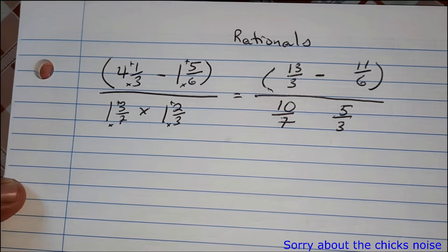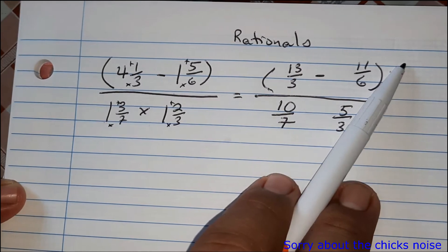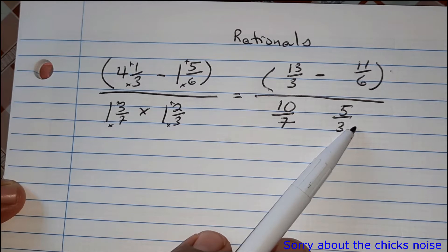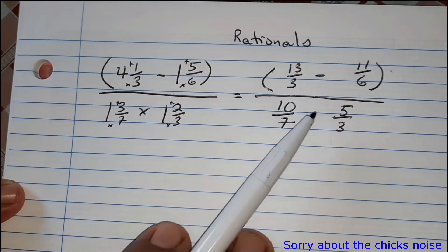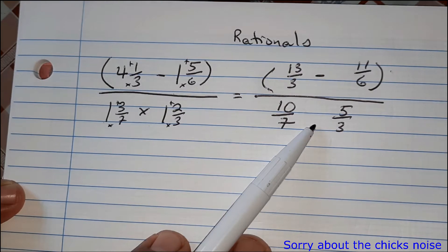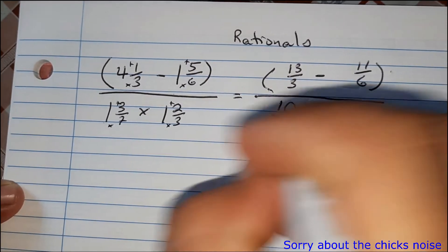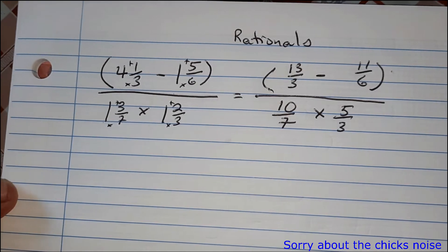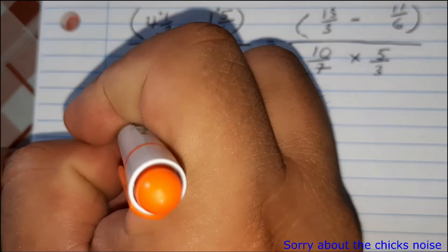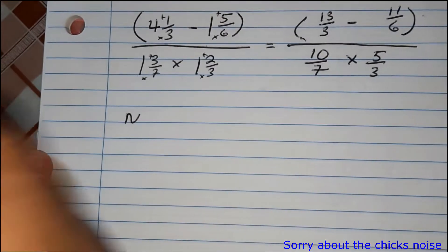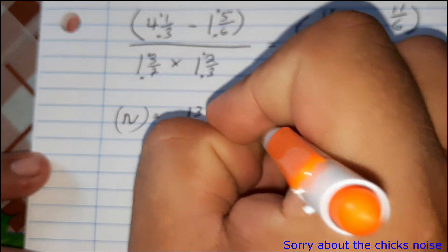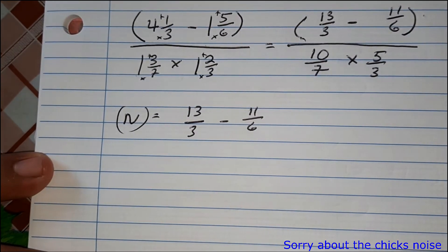Now we're going to work with the numerator and get an answer, and then work with the denominator and get an answer. Once we have both, we'll solve the two fractions. For the numerator: we have thirteen over three minus eleven over six.